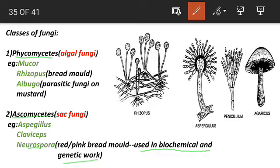Red bread mold Neurospora - being bread mold. I was coming because he used in biochemical and genetic work. Talk to the Cinnabar - organize me, spores less. Claviceps, Neurospora - get the forming. A lady red or being bread mold, get over the Cinnabar genetic work.